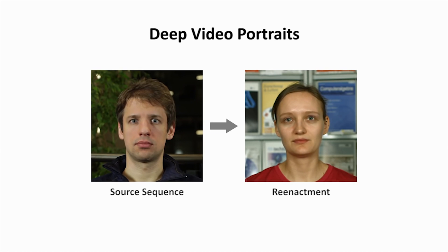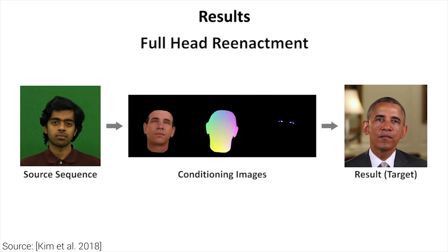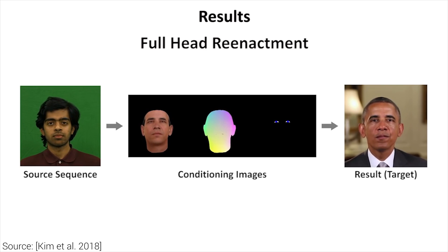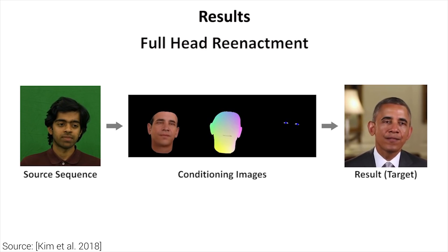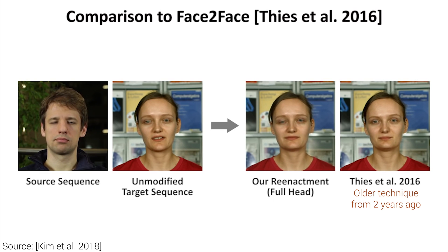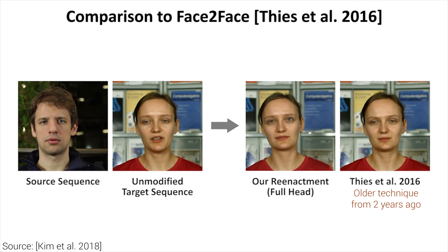Earlier, we talked about an amazing technique where the inputs were a source video of ourselves and a target actor, and the output was a reenactment — in other words, a video of this target actor with our facial gestures. This requires only a few minutes of video from the target, which is usually already available on the internet. Essentially, we can impersonate other people, at least for one video.